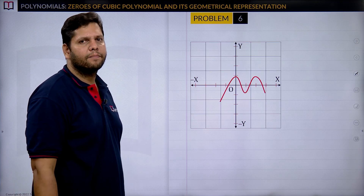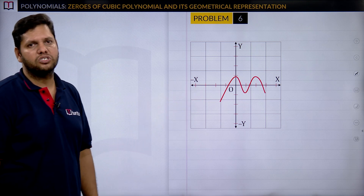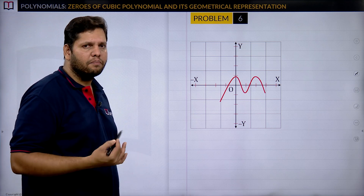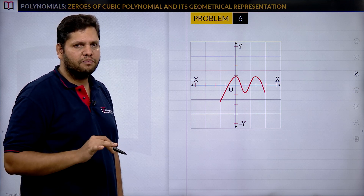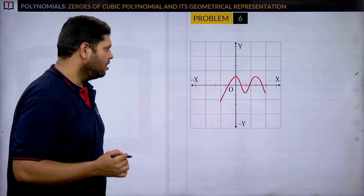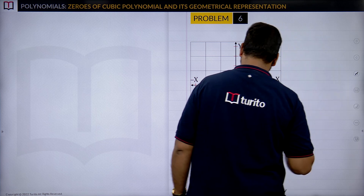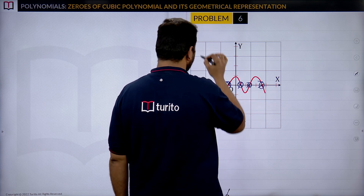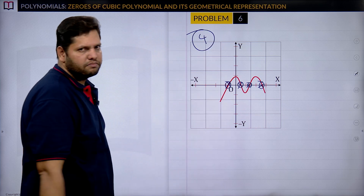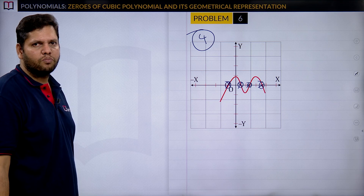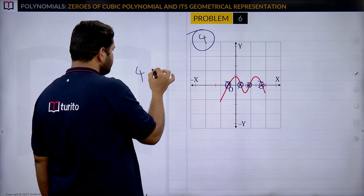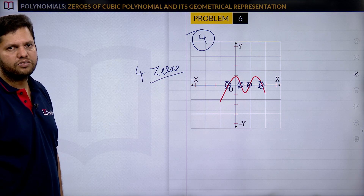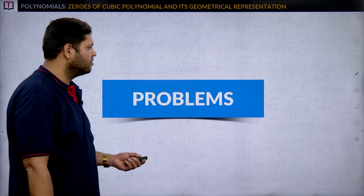For a curve whose shape we cannot identify — whether cubic or biquadratic — we simply count the intersection points with the x-axis. If the curve intersects at four points, we say the polynomial has exactly four zeros. From the graph alone, regardless of degree, four intersection points means four zeros.